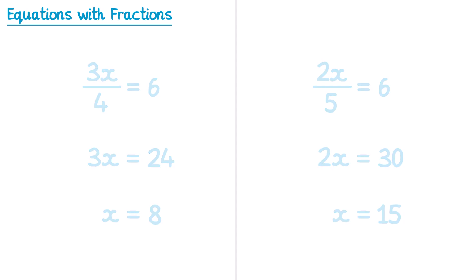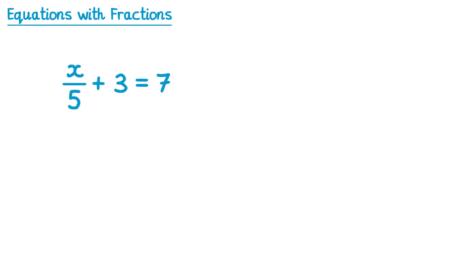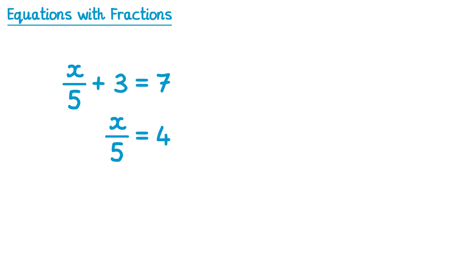Now let's look at another type of equation that's slightly different in structure. This equation has a fraction but also a plus 3 that we need to deal with first. To deal with the plus 3 we subtract 3 from both sides — the plus 3 cancels, leaving x over 5. On the right, 7 subtract 3 is 4. This one-step equation has divide by 5, so the inverse is multiplying by 5 on both sides. The 5s cancel on the left.